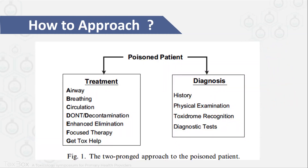Simply, how to approach a patient requires two major parts. First, you need to diagnose — done by history, physical examination, toxidrome recognition, and some specific diagnostic testing. Simultaneously, you need to start treatment, beginning with your ABCs. There are crucial toxicology-specific considerations: for airway, consider antidotes; in D, consider decontamination; then E — enhanced elimination; focused therapy; and F — always get toxicology or toxicologist help.